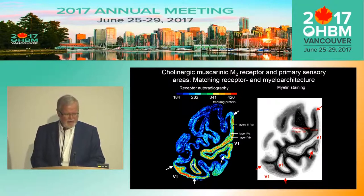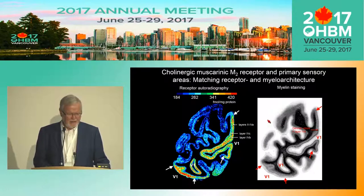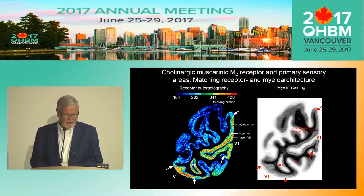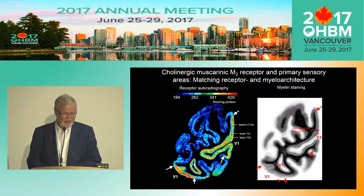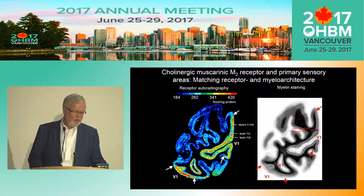Another example is the primary visual cortex in the human brain. On the right side you see the myelin-stained section, and you can easily recognize the Gennari stripe. The Gennari stripe stops here and here, and V1 is identifiable because the Gennari stripe stops at its borders. You see the correlated expression of a high density of the Muscarinic M2 receptor labeling the primary visual cortex.